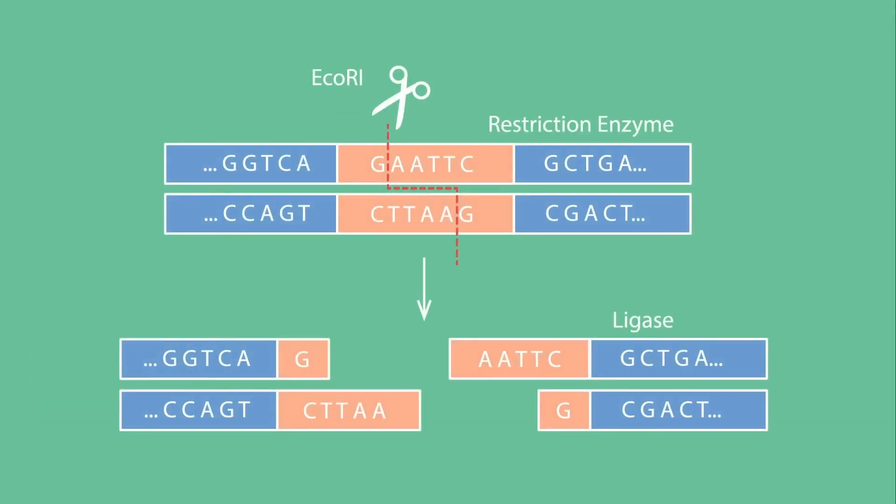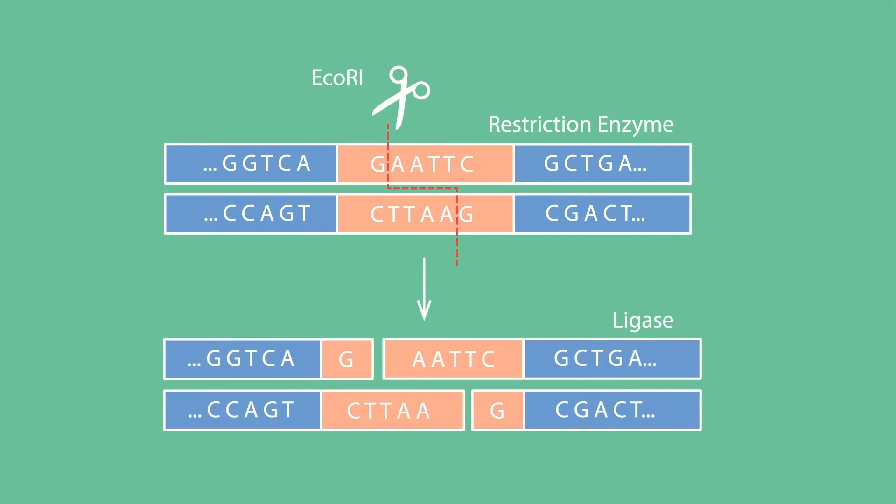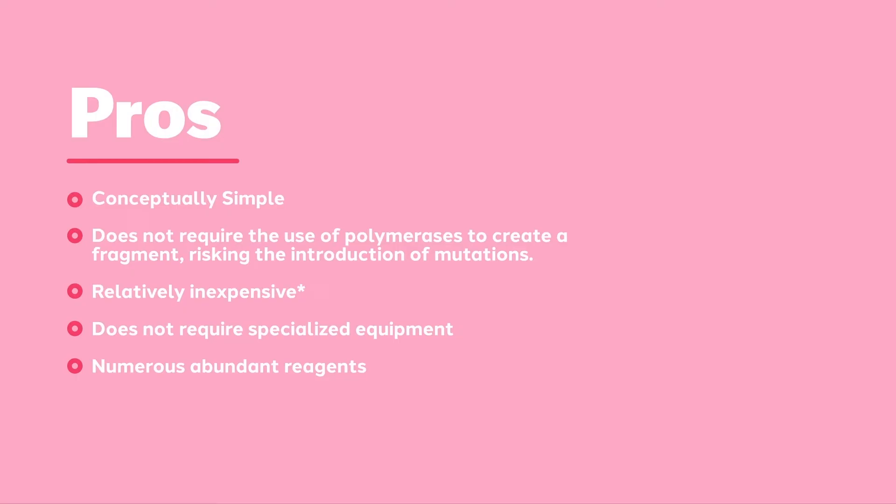Cloning with restriction enzymes is made possible by the enzyme DNA ligase. In the lab, purified DNA ligase is used to covalently rejoin the ends of DNA together. Restriction cloning is conceptually as simple as cut and paste.